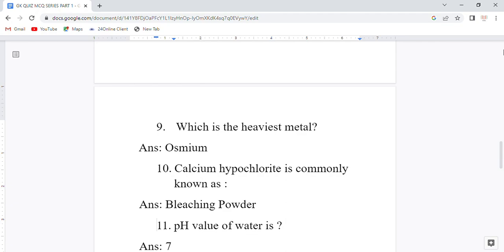Tenth question: Calcium hypochlorite is commonly known as what? Answer is bleaching powder.